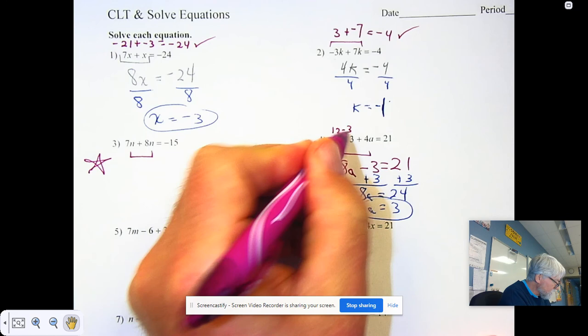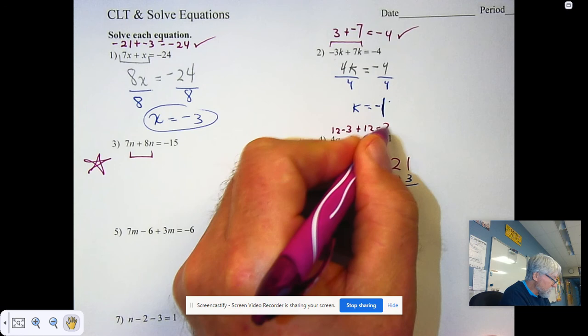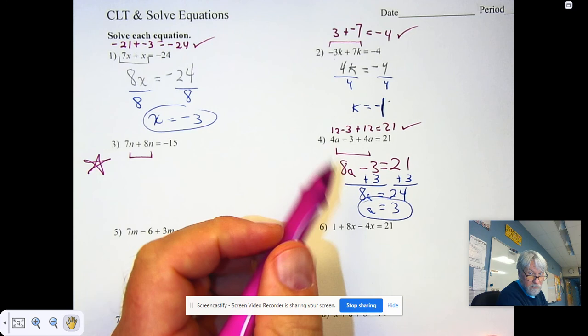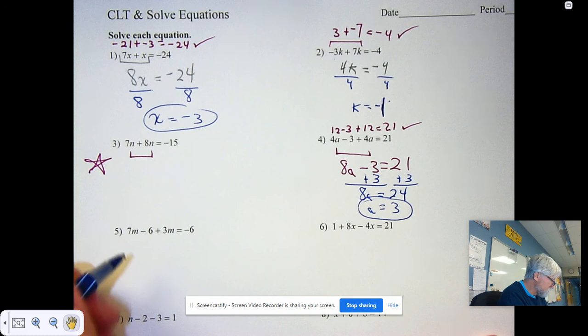I can do the check. 3 times 4, that's 12 minus 3 plus 12. That's 9 plus 12. That does equal 21. When you have subtracting and adding, along with multiplying with your variable, you have to undo that subtracting or adding first.